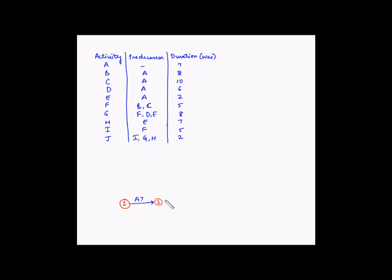We will draw 4 arrows emerging from event 2 representing B, C, D, and E. B takes 8 weeks, C takes 10 weeks, D takes 6 weeks, and E takes 2 weeks.